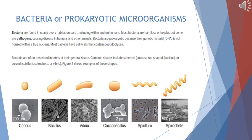Bacteria, like other microorganisms, are found in every habitat on Earth — in soil, in the air, in water, and in or on human beings. They may be harmful or harmless. Certain bacteria are pathogens and cause diseases in human beings, animals, and plants. Bacteria are prokaryotic microorganisms because their genetic material, DNA, is not enclosed within a nuclear envelope. Most bacterial cell walls contain peptidoglycan, a complex molecule, and bacteria have no true nucleus. Bacteria come in different shapes: spherical or cocci, rod-shaped or bacillus, and curved shapes such as vibrio, spirillum, or spirochete.